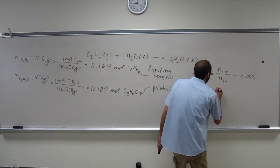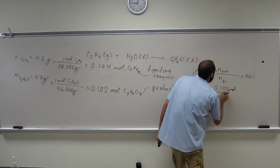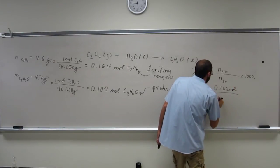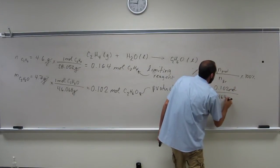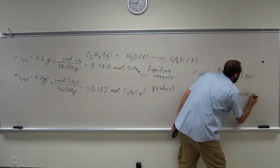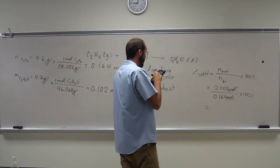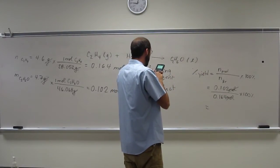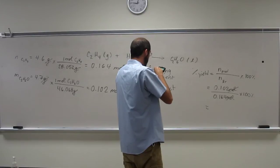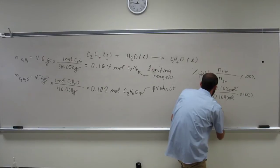So do we have all those numbers? Yeah. So 0.102 moles divided by 0.164 moles times 100%. Notice moles cancel. What did you guys get? 62.2%.